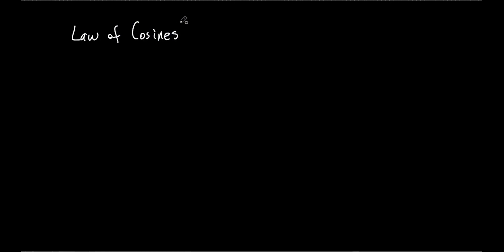It's one equation, and probably half of the equation is a formula you already know. This is called the law of cosines. It starts off just like the Pythagorean theorem, but then they throw some other stuff in there to account for this not being a right angle. Instead of A squared plus B squared equals C squared, we start with the C. C squared equals A squared plus B squared — so you've already got half of the law of cosines memorized.